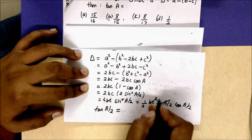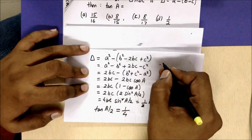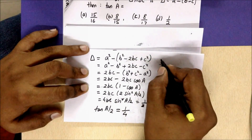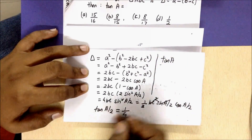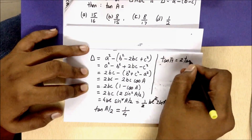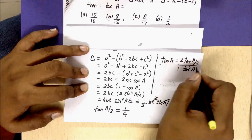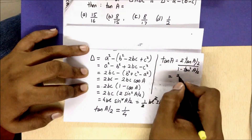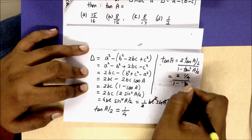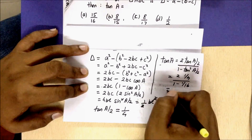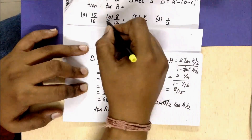After cancellation, we are left with cos(A/2) on one side, which gives us tan(A/2) = 1/4. Now using the half-angle formula, tan A = 2·tan(A/2) / (1 − tan²(A/2)). Substituting tan(A/2) = 1/4: tan A = 2·(1/4) / (1 − 1/16) = (1/2) / (15/16) = 8/15.